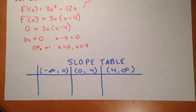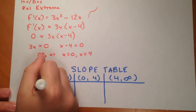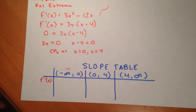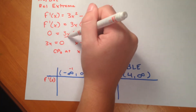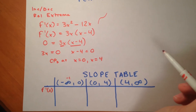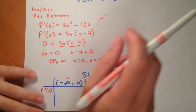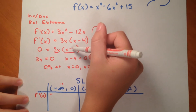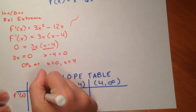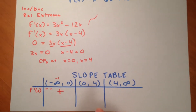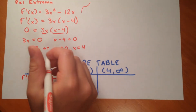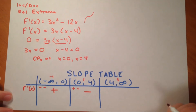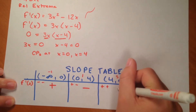Now we're going to determine the increasing and decreasing parts of our function f prime x. We just pick an arbitrary number in each bound. Using negative 1: 3x gives negative, and x minus 4 also gives negative — negative times negative is positive, so the function is increasing on negative infinity to 0. For 0 to 4, using 1: 3 times 1 is positive, and 1 minus 4 is negative, so the function is decreasing on that interval. Using 5 for the last interval: both factors are positive, so the function is increasing on that interval.